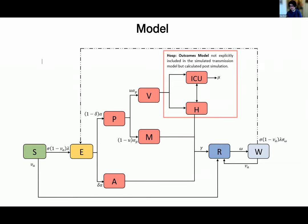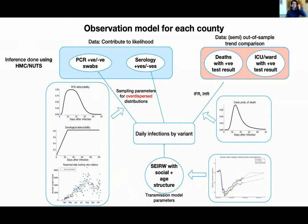One important feature is the so-called W class — the waned immunity compartment. We assume a reasonably fast rate of leaving complete immunity from COVID: typically on average six months, though we've done a lot of sensitivity around that. We then fit the amount of long-term protection against reinfection from studies, and this has consequences later when we look at Omicron.